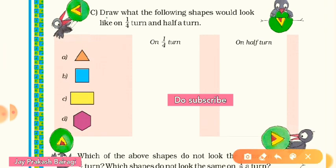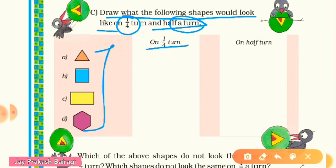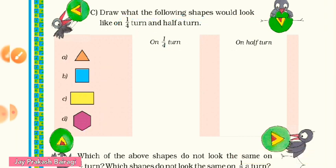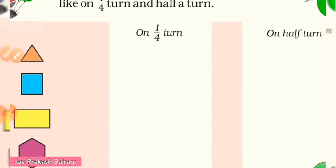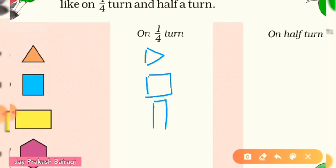Question C: draw what the following shapes would look like on one fourth turn and half turn. For the triangle, in one fourth right turn it will look like this. The square looks the same. The rectangle, in one fourth turn, rotates to look like this. And the hexagon in one fourth turn will look like this.